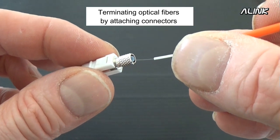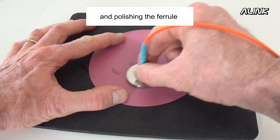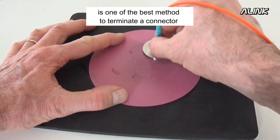Terminating optical fibers by attaching connectors with an adhesive and polishing the ferrule is one of the best methods to terminate a connector.